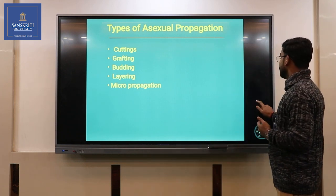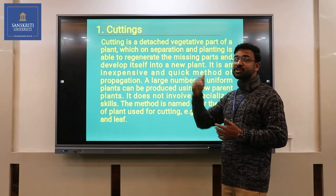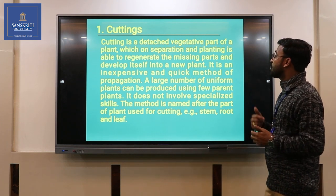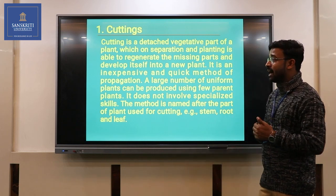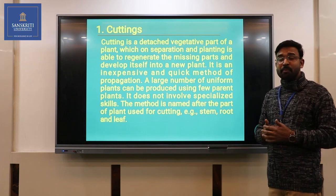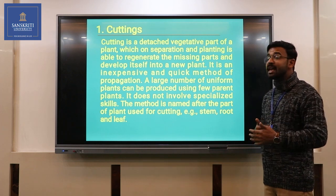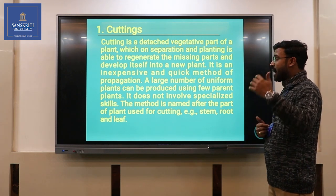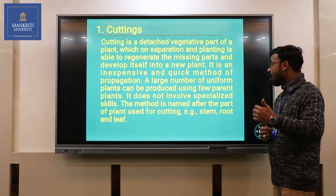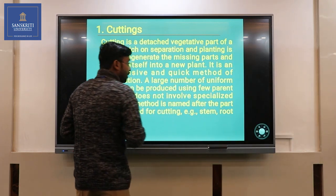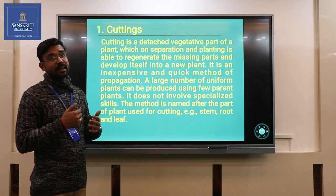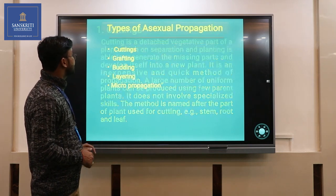First, cuttings. A cutting is a detached vegetative part of a plant which, on separation and planting, is able to regenerate the missing parts and develop itself into a new plant. It is an inexpensive and quick method of propagation. A large number of uniform plants can be produced using few parent plants. The method is named after the plant part used — stem, roots, and leaves.